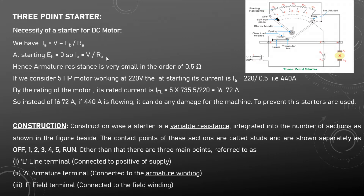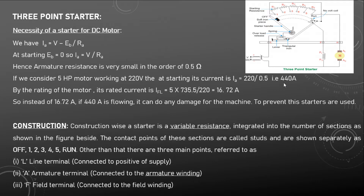The armature resistance is very, very small — on the order of 0.5 ohms — for any DC motor. If we consider a 5 HP motor working at 220 volts, the starting current is V divided by RA, which is 220 divided by 0.5, giving a starting current of 440 amps.